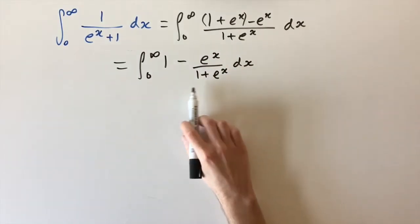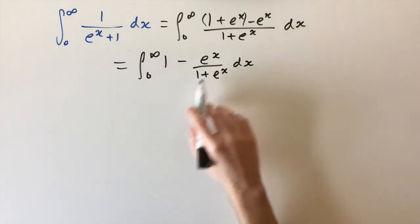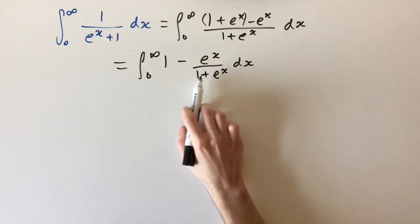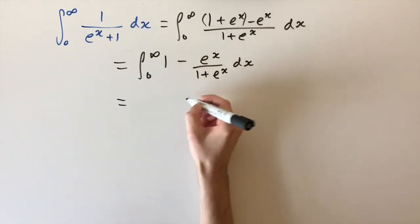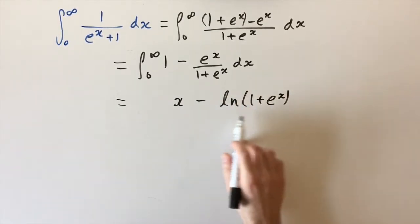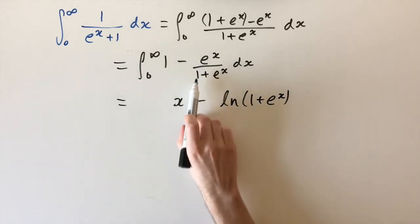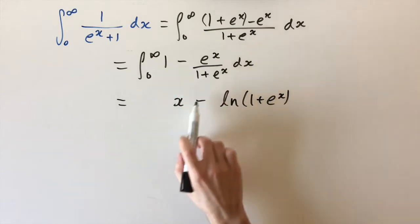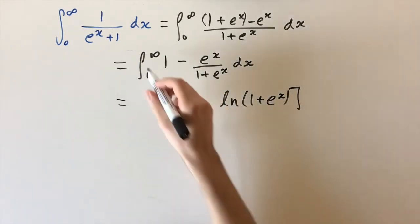The reason I did that is because we can evaluate this integral straight away: the derivative of the denominator is the numerator. The derivative of 1 plus e to the x is just e to the x, so we can integrate this as the logarithm of the denominator. We're left with x minus the natural logarithm of 1 plus e to the x. The derivative of log gives 1 over the function inside, and by the chain rule the derivative inside is e to the x, which gives us that term. Now we need to evaluate the limits from 0 to infinity.